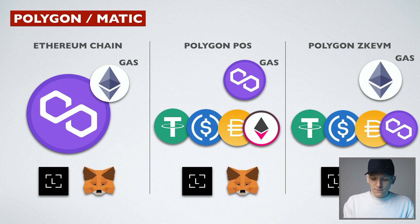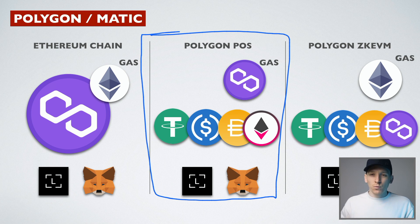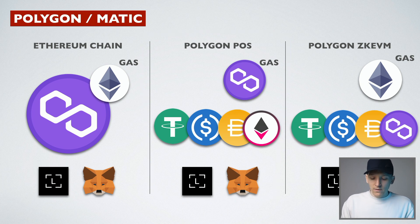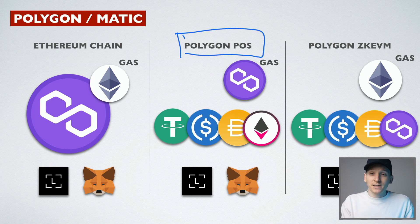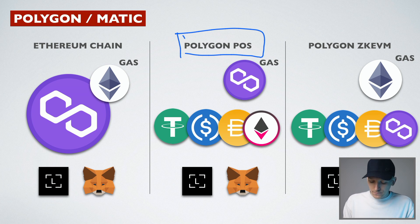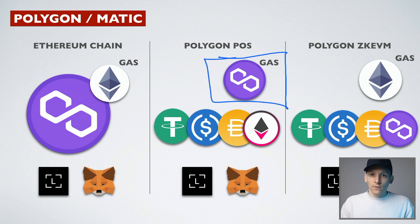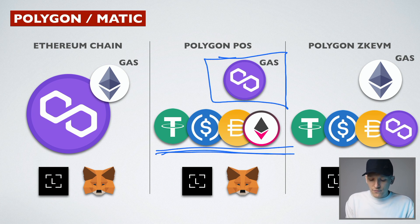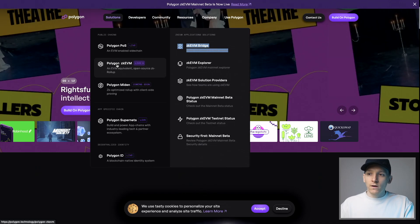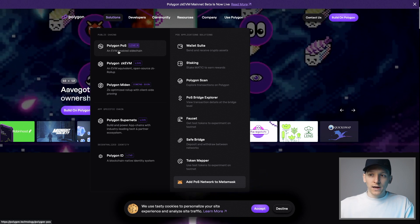To the right-hand side of that, we have the Polygon Proof of Stake chain — what most people know as the Polygon chain, where most activity is right now. That is not Ethereum, so you have to bridge tokens over from Ethereum onto it. You can also use exchanges to withdraw crypto directly on the Polygon Proof of Stake chain. This chain uses MATIC tokens for gas.